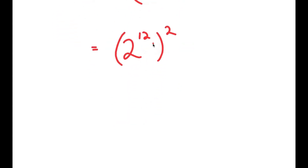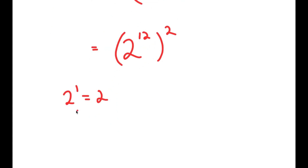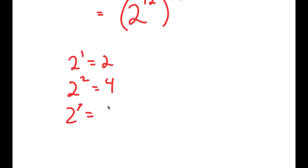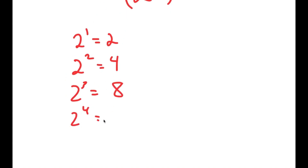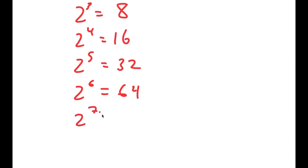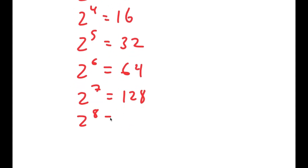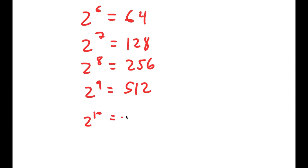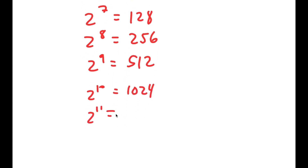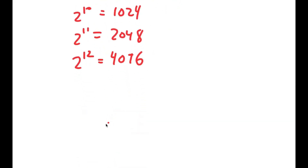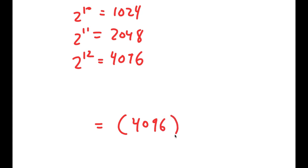Now, 2 to the power of 12: 2 to the power of 1 is equal to 2; 2 to the power of 2 is double of 2 to the power of 1, so 4; 2 to the power of 3 is double of 2 to the power of 2, which is 8. This pattern goes on — I keep doubling until I reach 2 to the power of 12, which is equal to 4,096. So this is my value for 2 to the power of 12, giving me 4,096 squared.